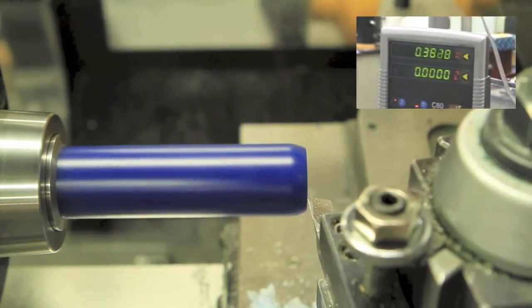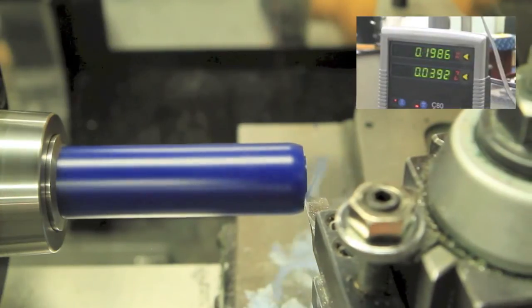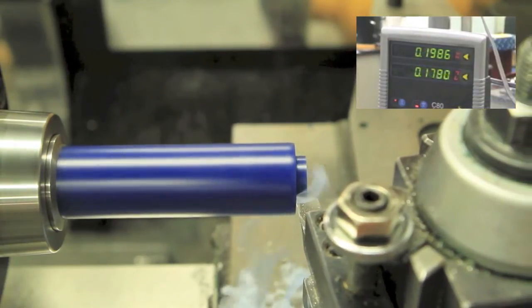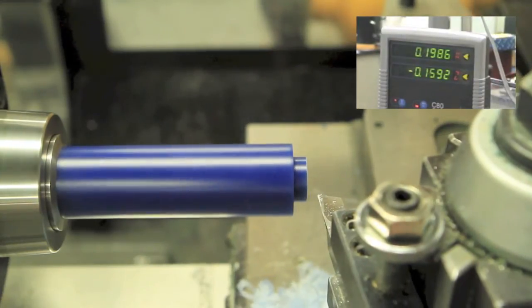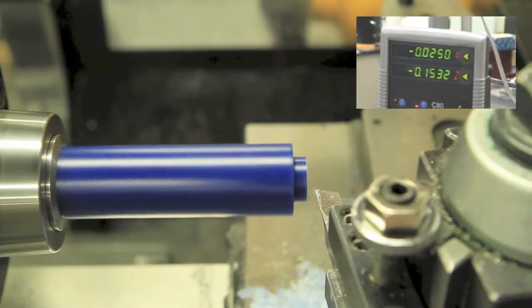Now we're going to use a series of rough cuts to remove the majority of the excess material. Moving in roughly a quarter inch with each cut, move the tool to the left. Be sure to stop before reaching the full two hundred and fifty thousandths. Between two hundred and thirty and two hundred and forty is ideal.